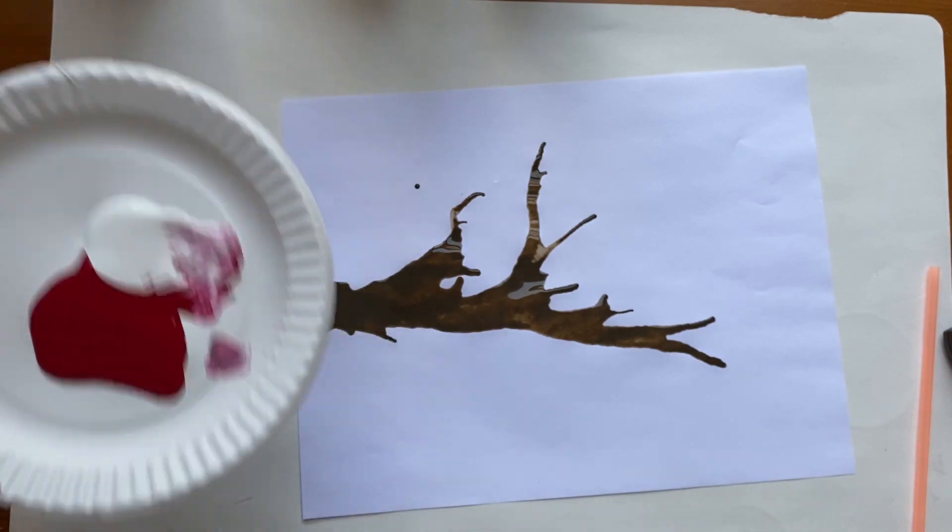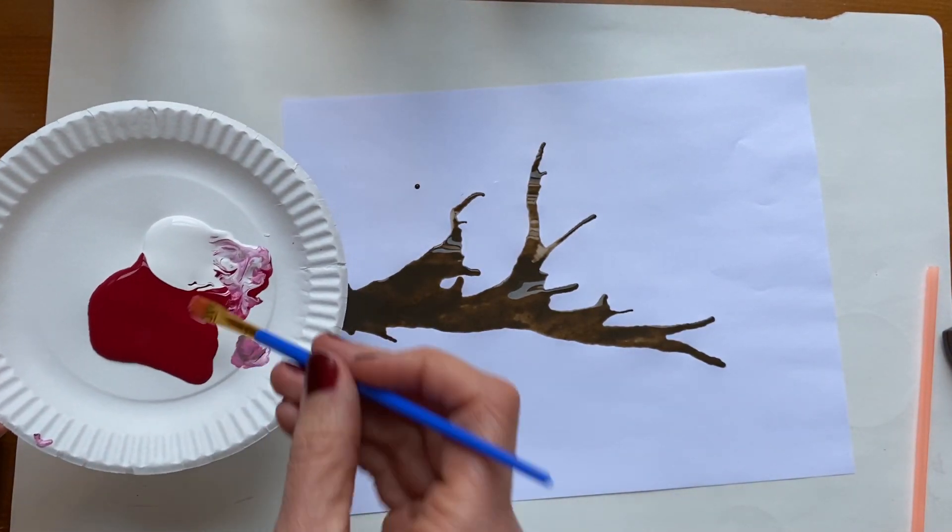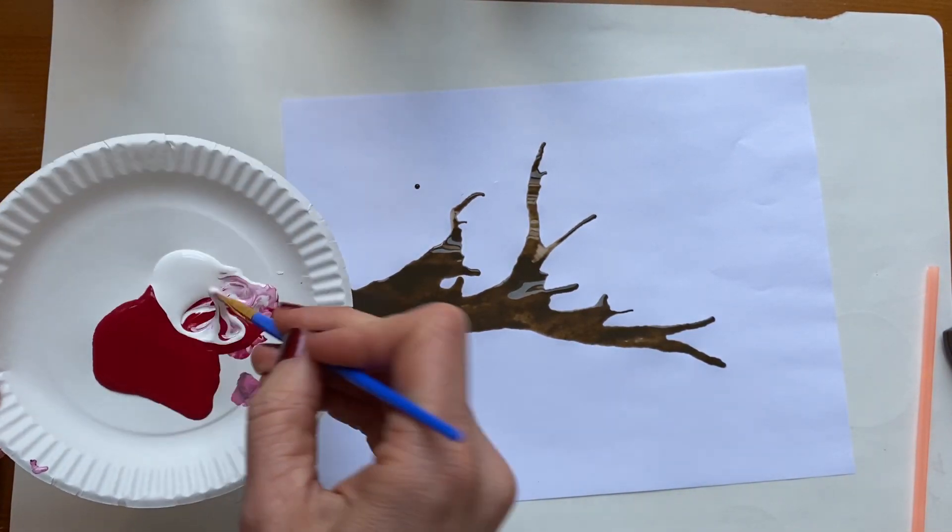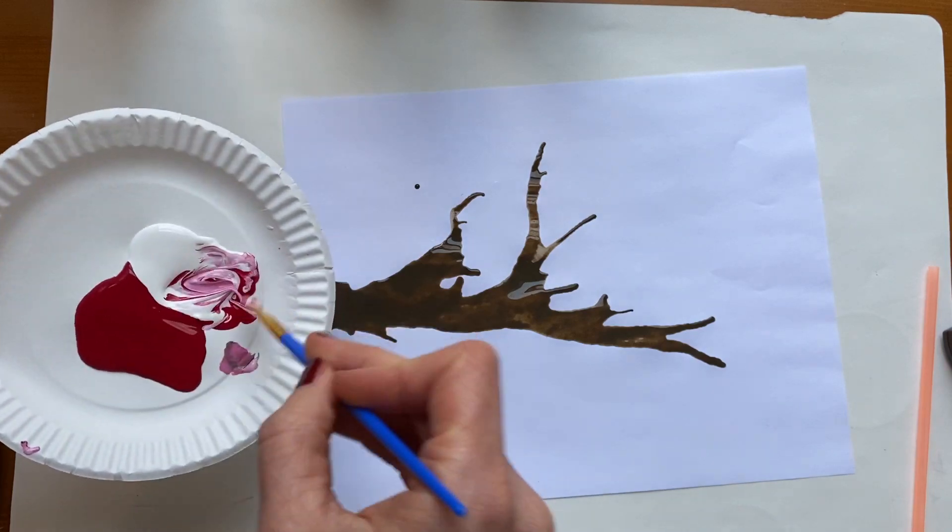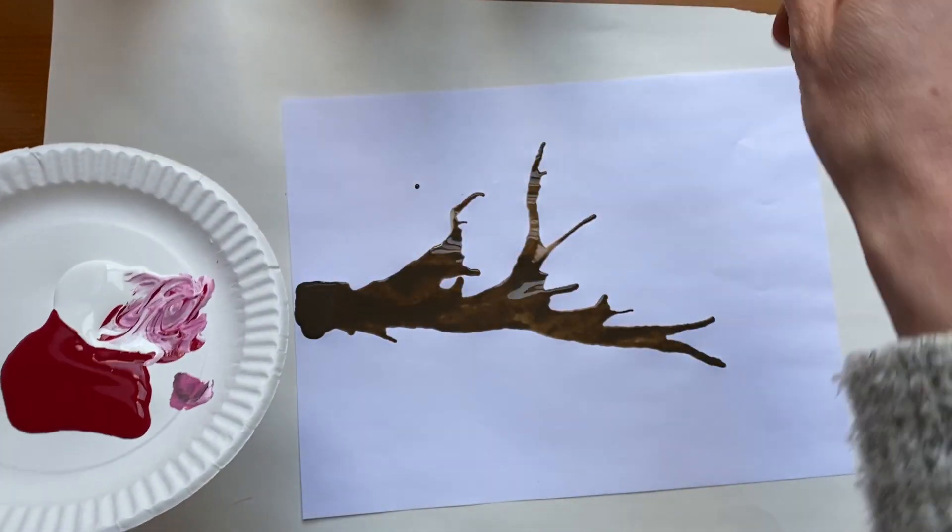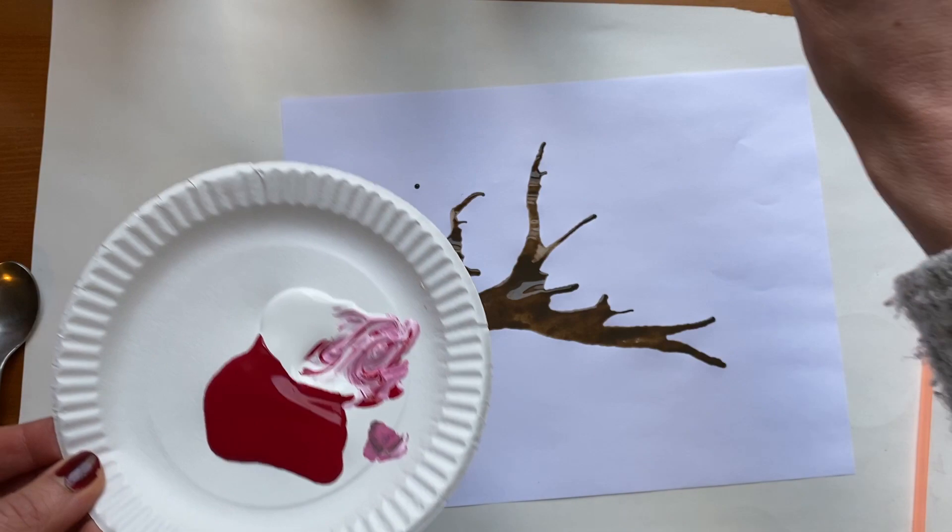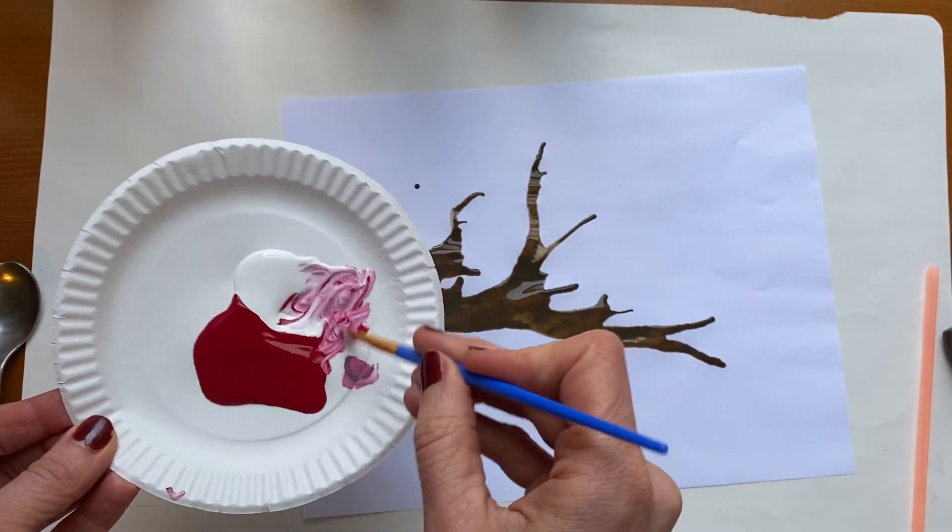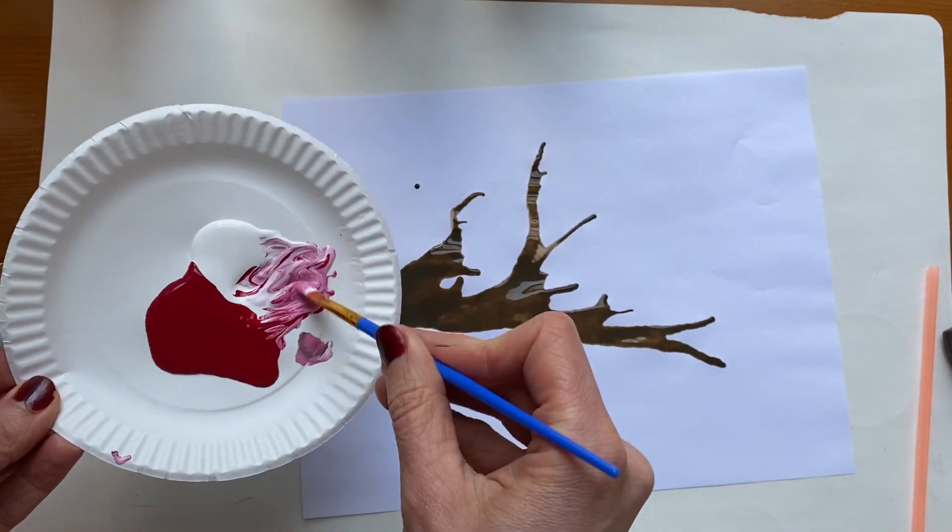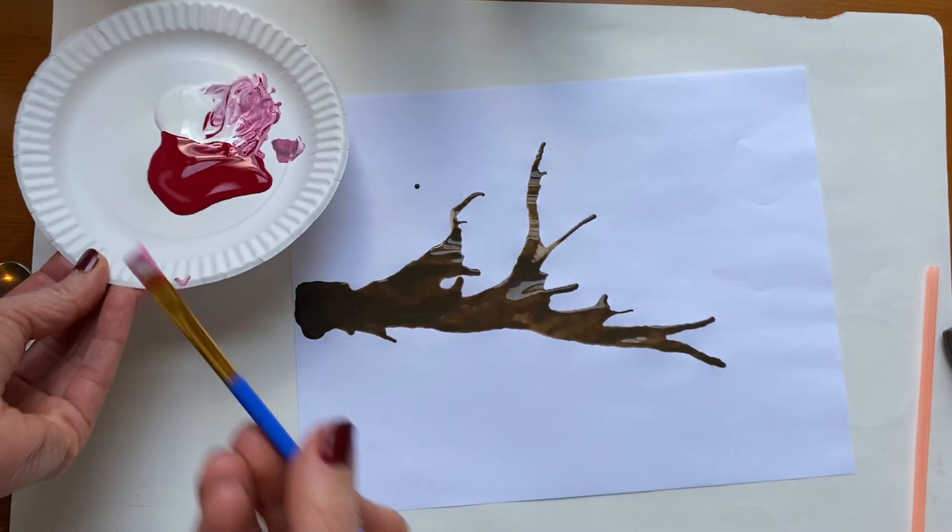But for the sake of the video, I'm just gonna show you how I would add the flowers. So I had some magenta paint and I had some white paint that I'm gonna mix together to make pink cherry blossoms. But you can use any colors you want—you can paint your flowers however you want.